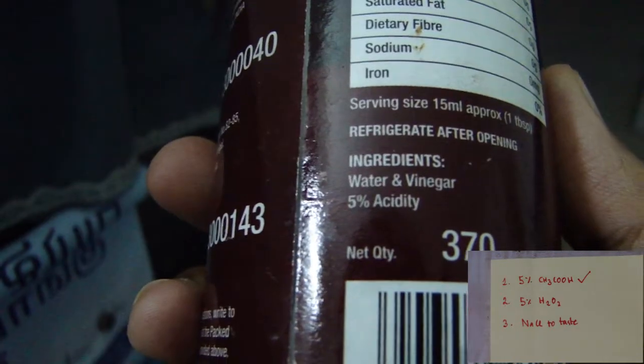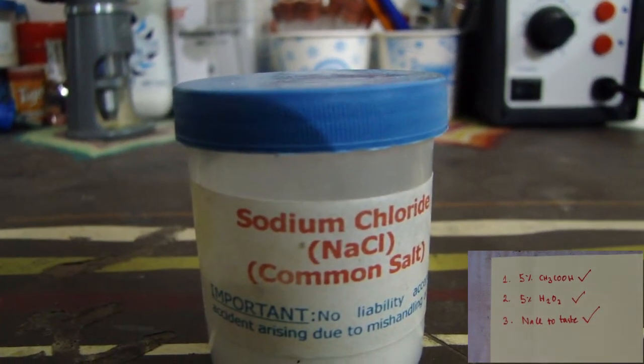This simple recipe I discovered uses three household ingredients: vinegar, which is 5% acetic acid, and some hydrogen peroxide of the same concentration, and of course some salt to taste, which acts as a catalyst.